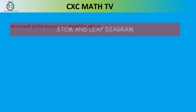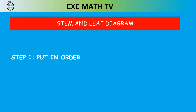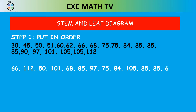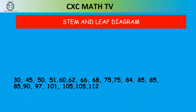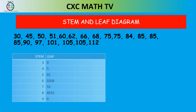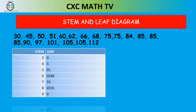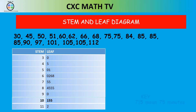First, rearrange from lowest to highest. The least time spent was 30 minutes; the highest was 112. Now create the stem going from 3 up to 11. Then fill in the leaves: 3|0, 4|5 for 45, 5|0 for 50, then 6|0, 6|2, 6|8 for 60, 62, and 68 — and continue in the same way.